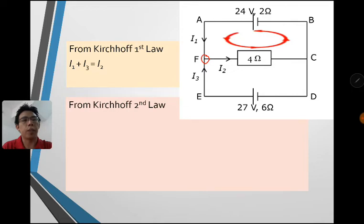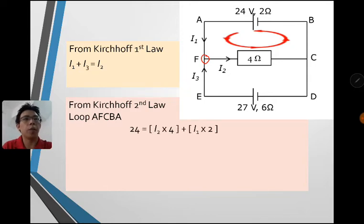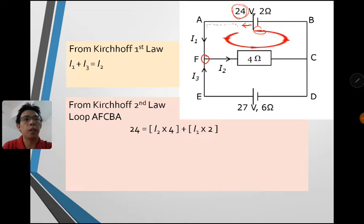For the Second Law, we choose the direction for loop AFCBA — we choose anti-clockwise. We form the equation: on the left-hand side we have 24 as the EMF. According to our direction, the current comes out from the positive, so it's positive 24. We search for other batteries along the loop AFCBA and there are none. Then on the right-hand side we write down the potential difference — as we trace along and meet a resistance, we find its PD. The PD for the 4Ω resistor is I2 times 4.